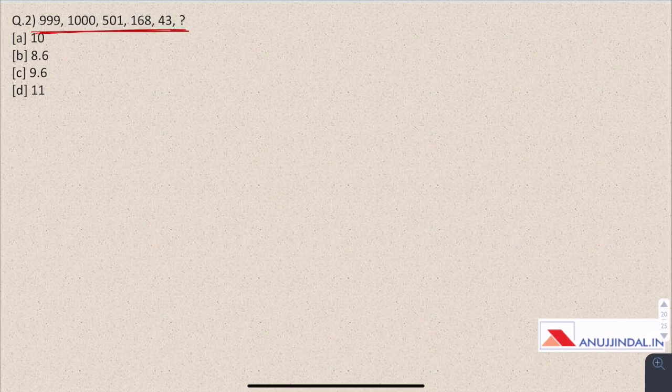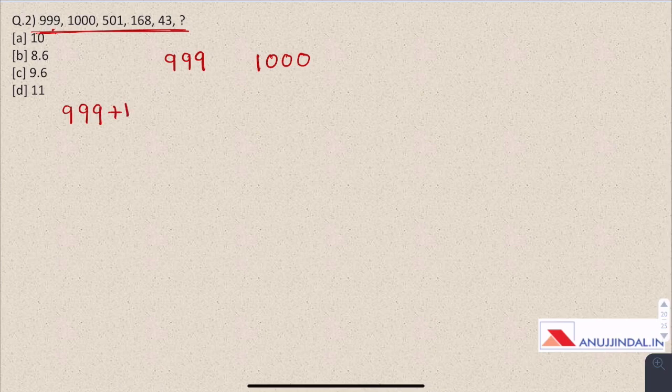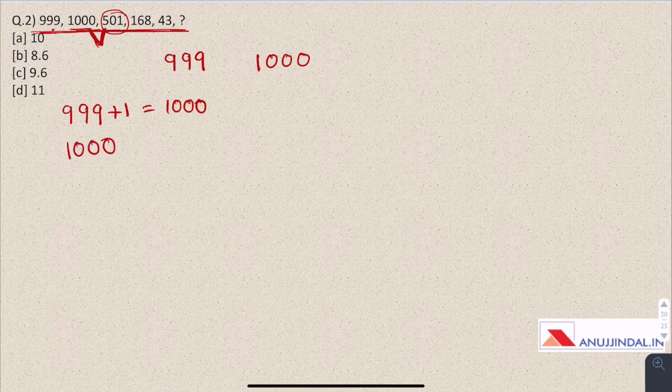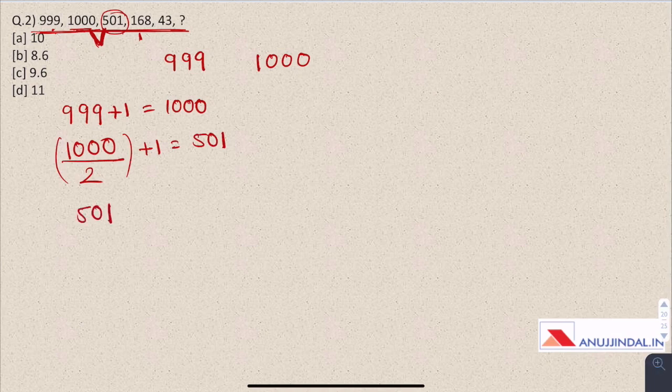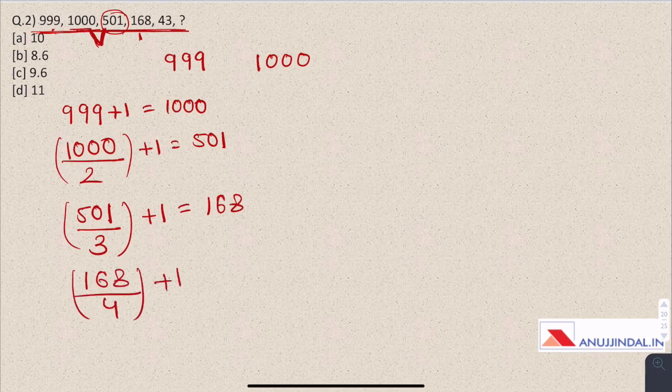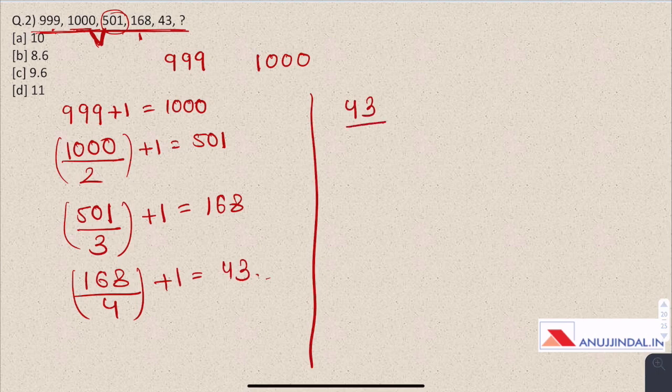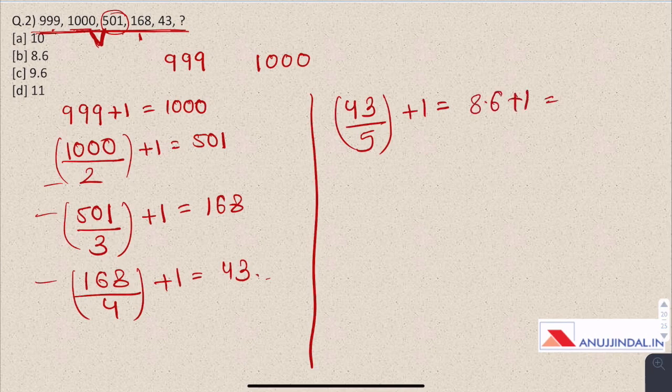Question 2. We have been given a series and we have to find the next number. So here first number is 999 and second is 1000. So it is nothing but 999 plus 1 which is 1000, and third number is 501, which is roughly half of 1000. So 1000 divided by 2 plus 1 is 501, and now this 168 is roughly one third of 501. So 501 divided by 3 which is 167 plus 1 equals 168, and now 168 divided by 4 plus 1 is 43, and 43 divided by 5 plus 1 equals 8 plus 0.6, which is 8.6 plus 1, which is 9.6.